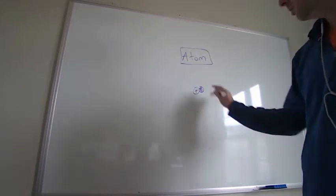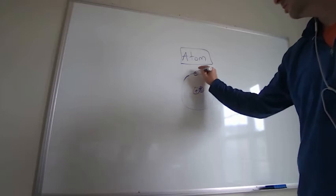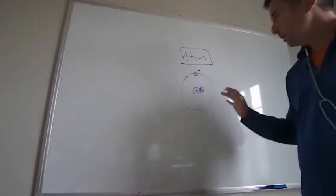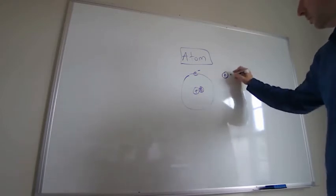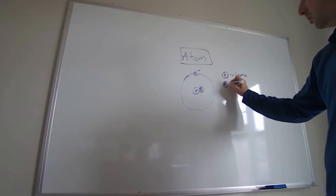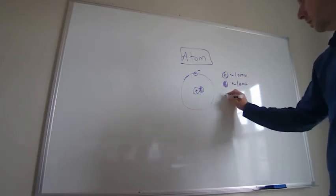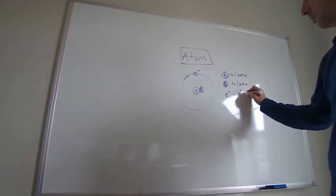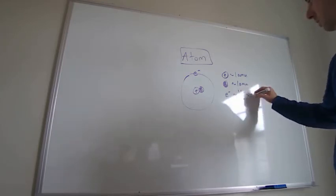Things we should know: protons are positive, they're roughly one atomic mass unit. Neutrons are neutral, they're roughly one atomic mass unit. And electrons are negative and they're roughly one one-thousandth, actually even smaller than that, atomic mass unit. So really they have like no mass.